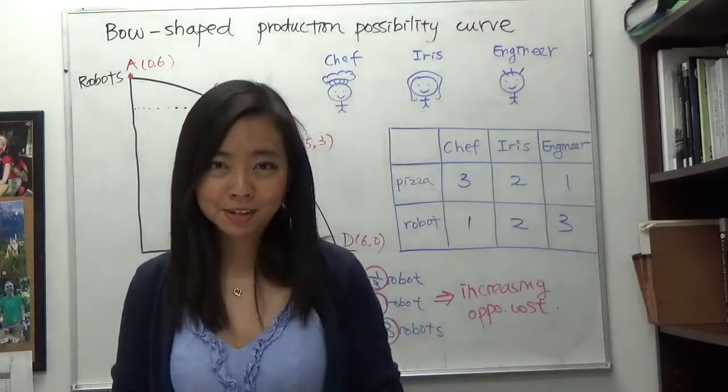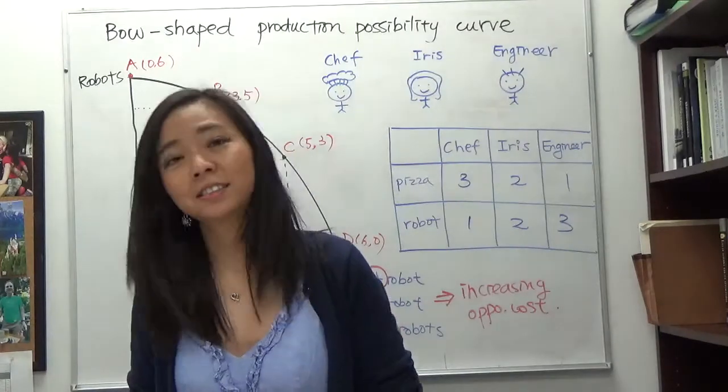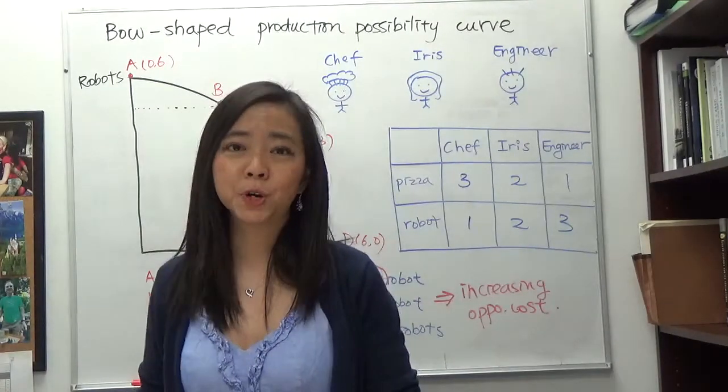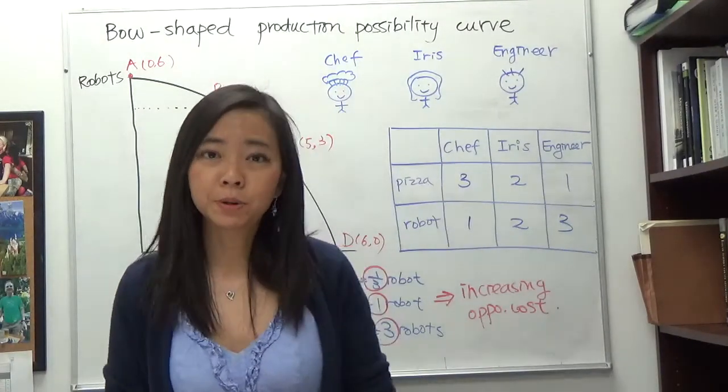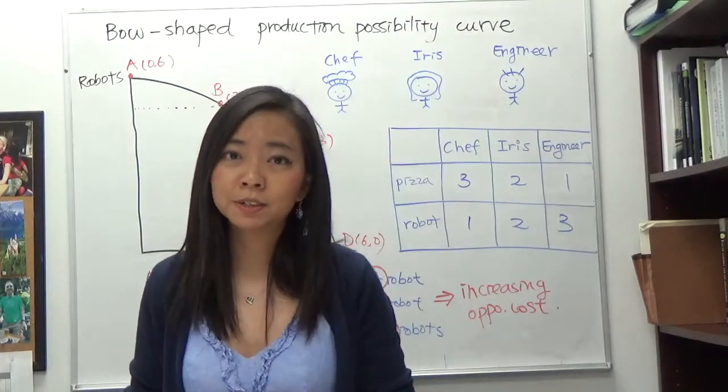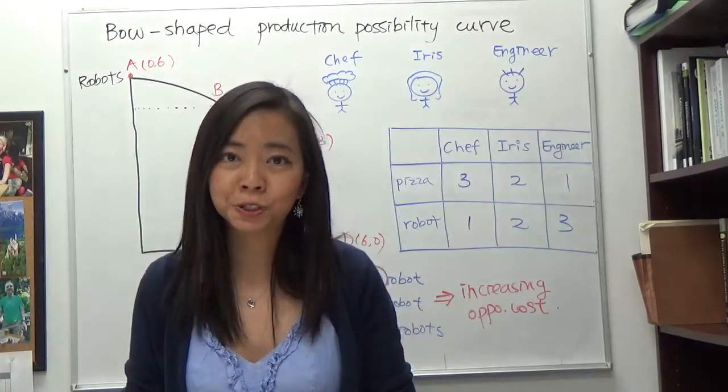Hello everyone, my name is Iris Franz, and today we're going to talk about why the production possibility curve is bow shaped.